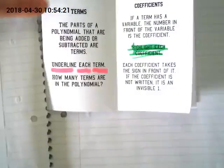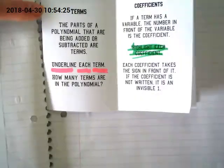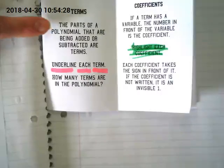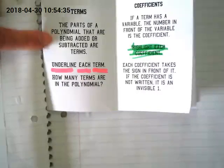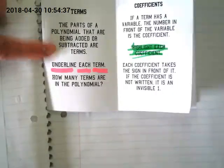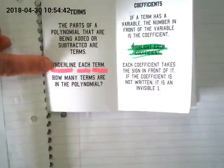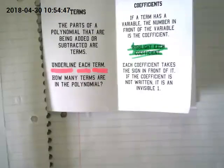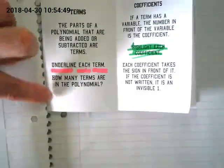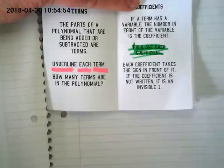So let's look through the terms. I'd like to read through this once with everyone listening. The parts of the polynomial that are being added or subtracted are what? Terms. When you're working with polynomials, you will underline each term as we get used to this vocabulary. You will not do it forever. How many terms are in the polynomial is a question you will be answering. Okay, this will make sense when we do an example in a minute.